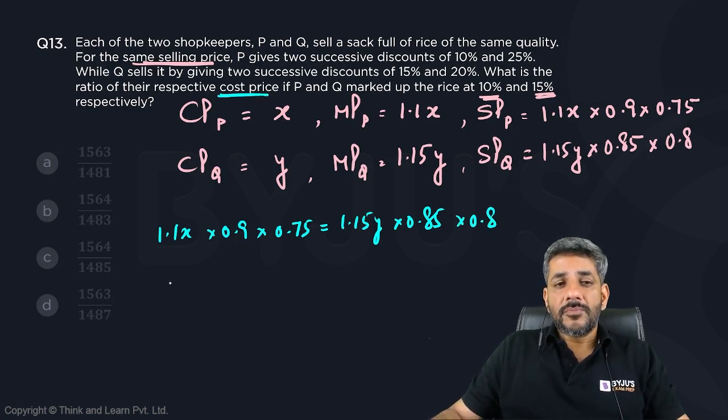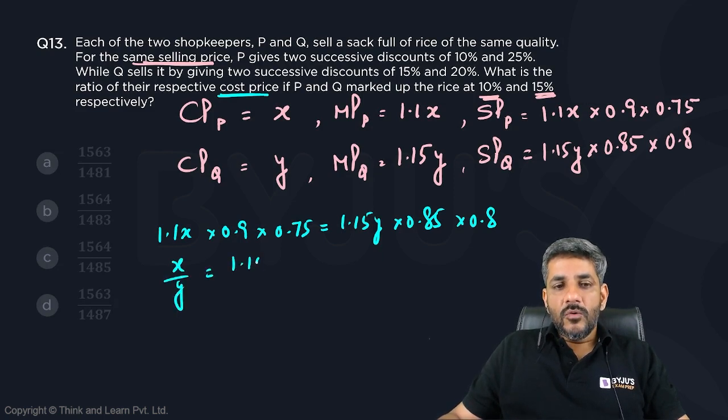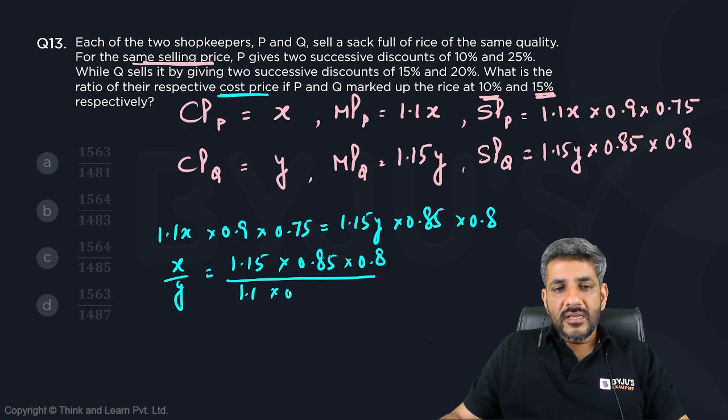I have to find out the ratio of their cost prices, so I need X/Y. What would it be? X/Y = (1.15 × 0.85 × 0.8) / (1.1 × 0.9 × 0.75).